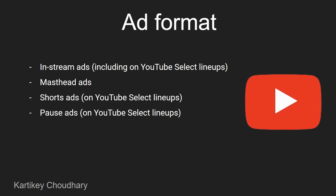The second format is masthead. Masthead basically showcases your brand in a native video format. These are placements at the top of the YouTube homepage or the mobile app, making it the most premium placement available — because it's the first thing someone sees when they go to the homepage. I'll show a screenshot of that.